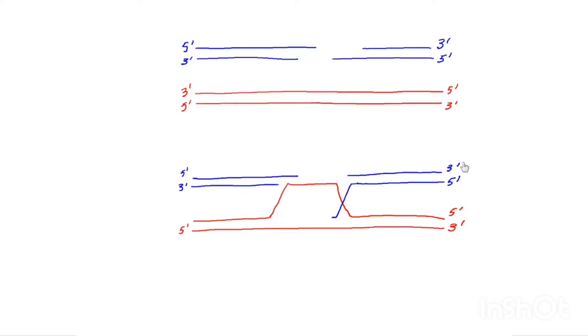All right. So now that strand invasion has occurred, it has displaced some of the homologous DNA from the intact chromosome. And that displacement forms a structure that we call a D-loop.